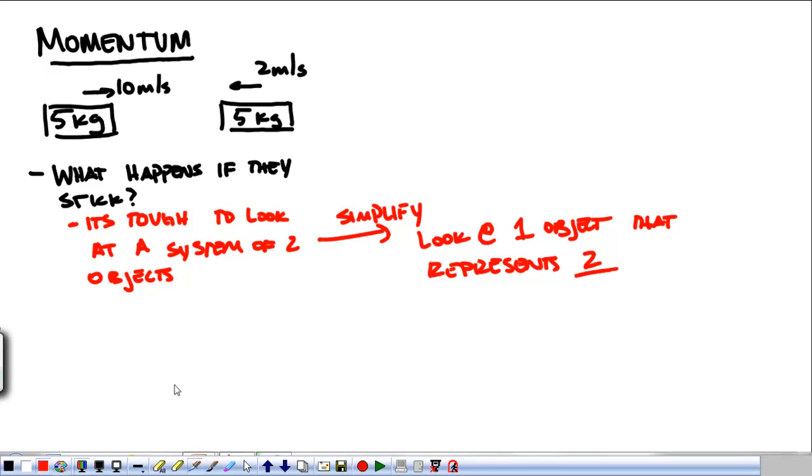The way that we can simplify systems is instead of looking at two separate objects, we look at the center of mass of the system.